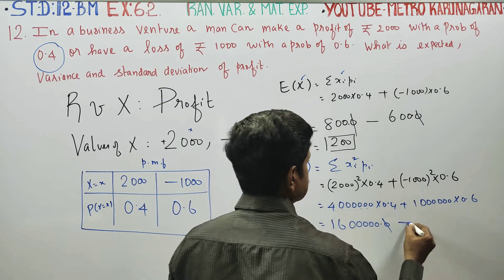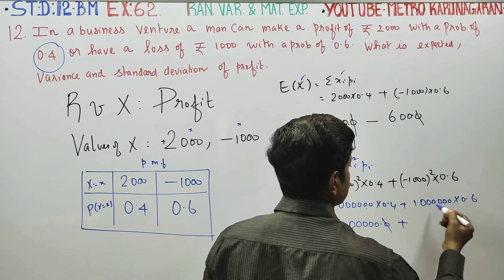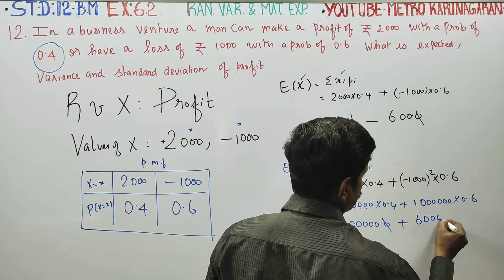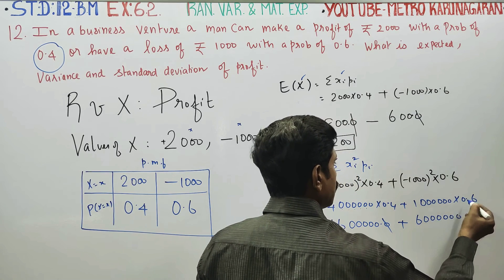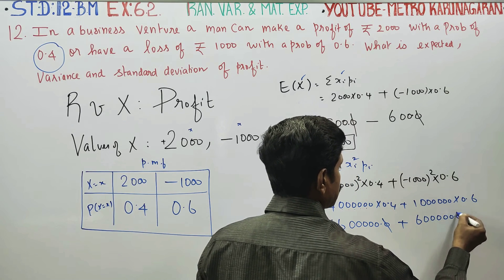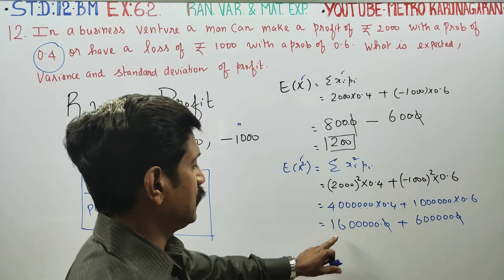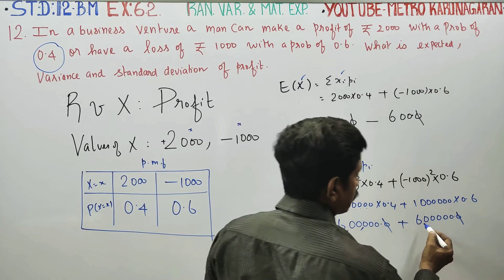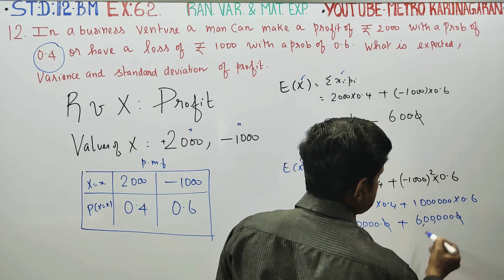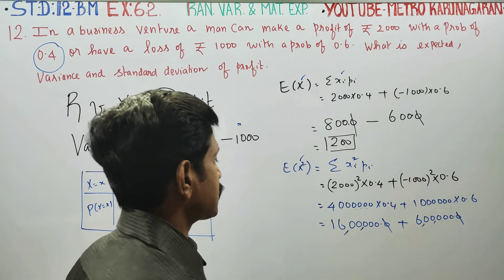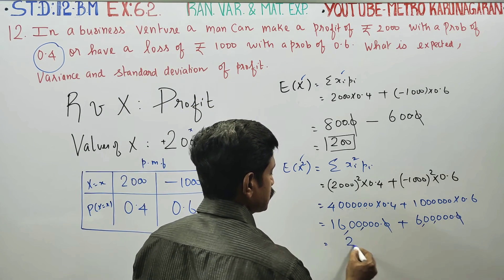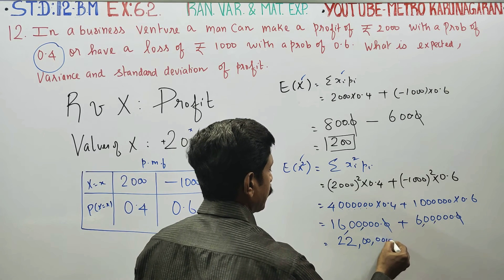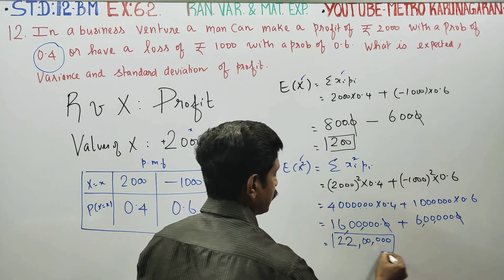Continuing the calculation: 40,00,000 × 0.4 = 16,00,000 (16 lakhs), and 10,00,000 × 0.6 = 6,00,000 (6 lakhs). Adding these together: 16 lakhs + 6 lakhs = 22,00,000 (22 lakhs). So the expectation of X² equals 22 lakhs, that is 22,00,000.